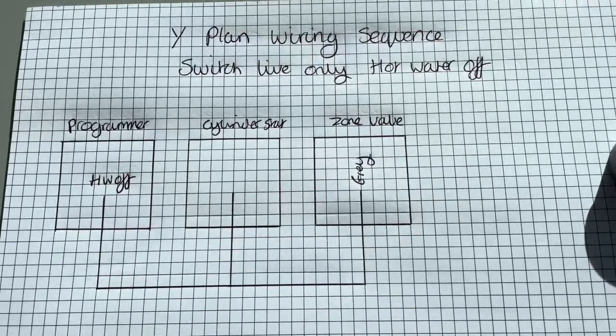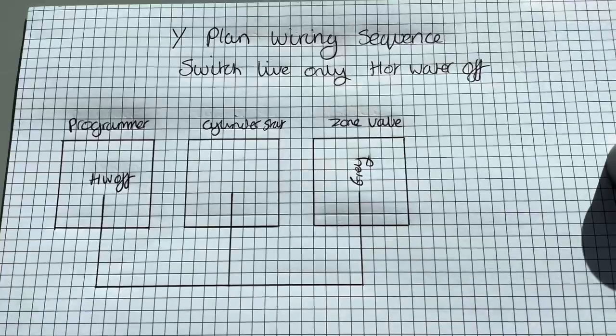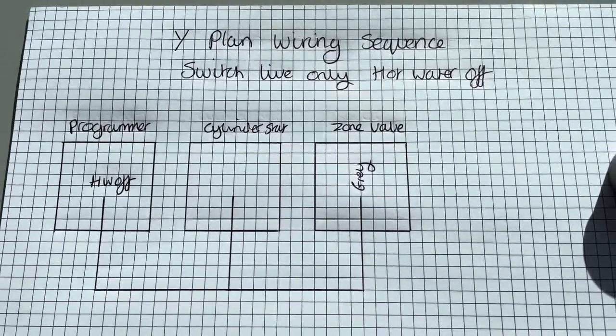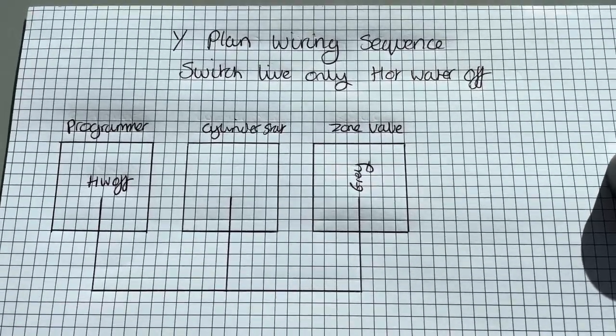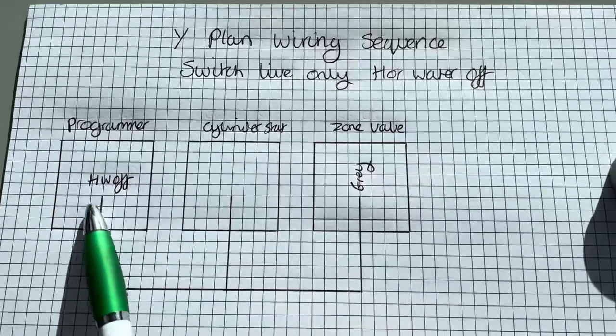So to me, the hot water off side of things is what complicated it the most for me on a Y-Plan system. Because on the drawings, there's cables everywhere. A live wire on the cylinder stat and the grey. And here it makes it a little bit simpler. So you've got your programmer.